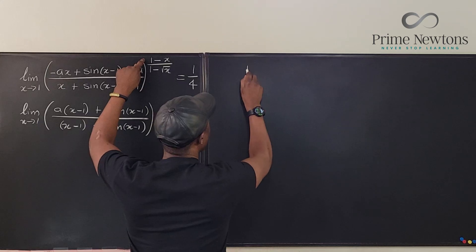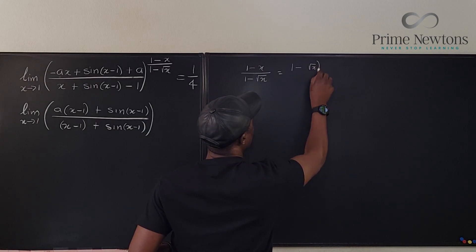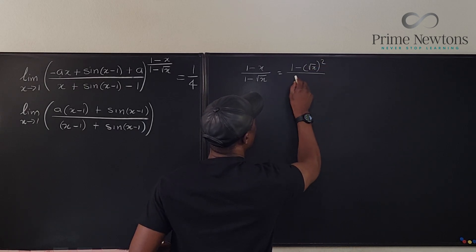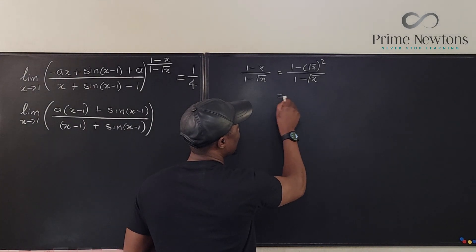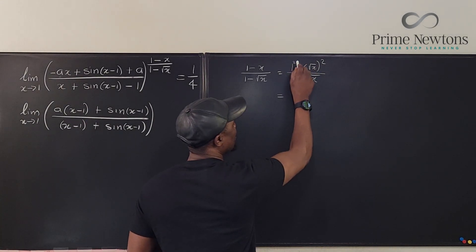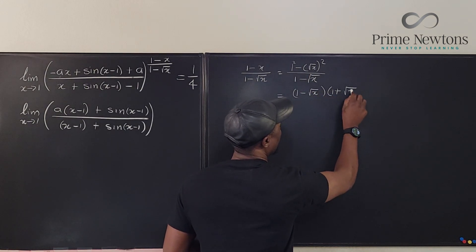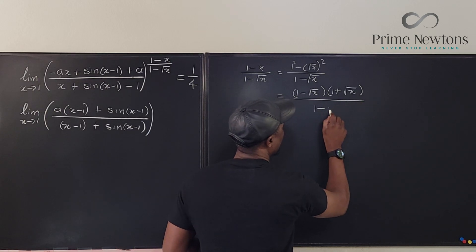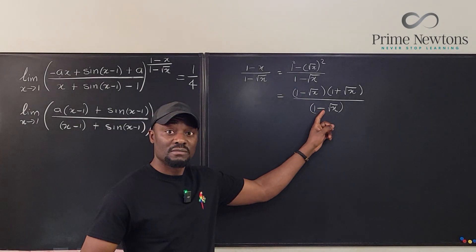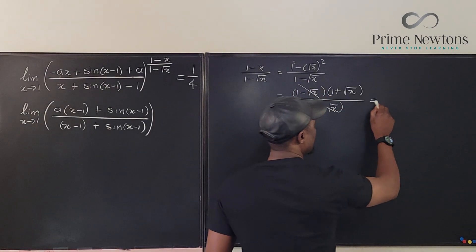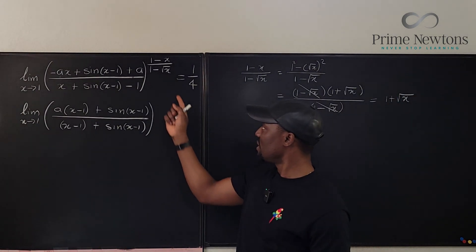Here, 1 minus x over 1 minus square root of x can be written as 1 minus square root of x squared, over 1 minus square root of x. That was the idea used in the previous video — this is the same thing as the difference of two squares, which is 1 minus square root of x times 1 plus square root of x. We can cancel the common factor and end up with 1 plus square root of x.